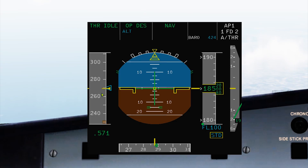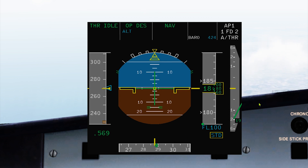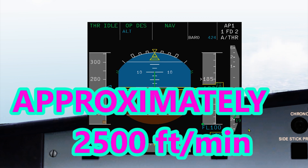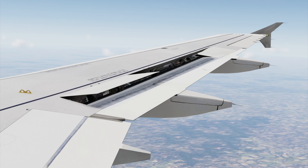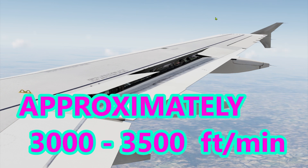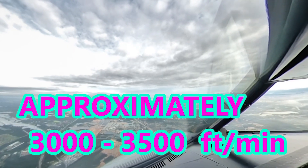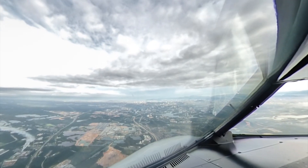Having open descent mode gives you 2,000 feet per minute rate of descent. With half speed brakes you can get more, and with full speed brakes you can get an even higher rate of descent.